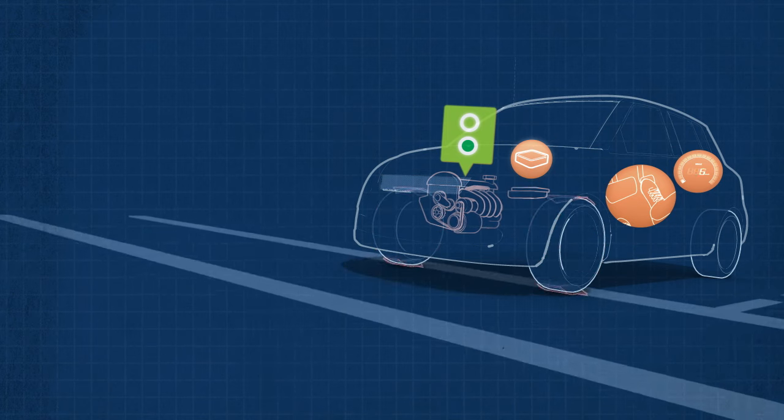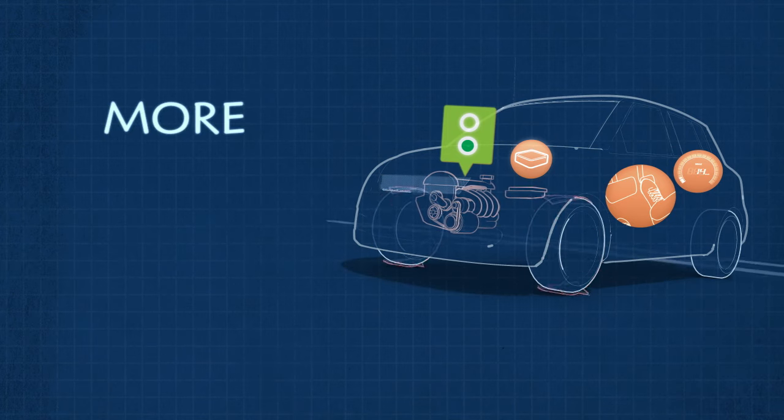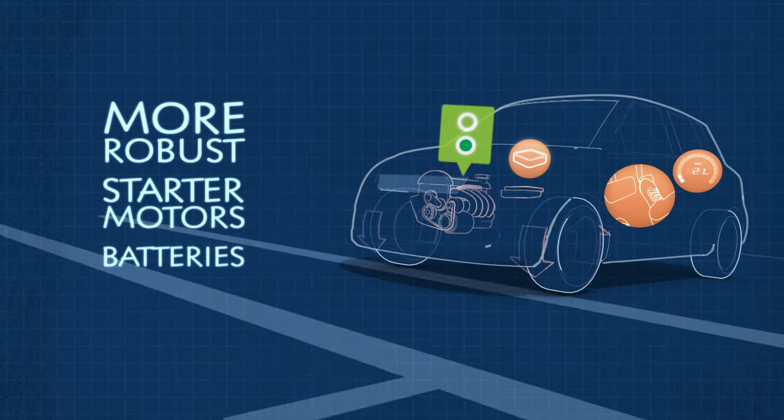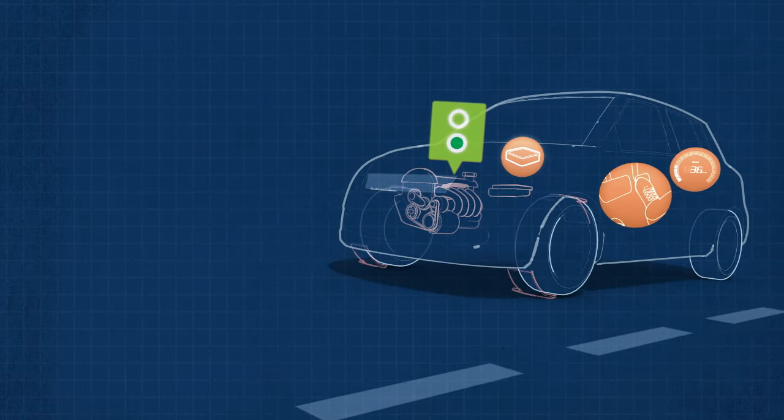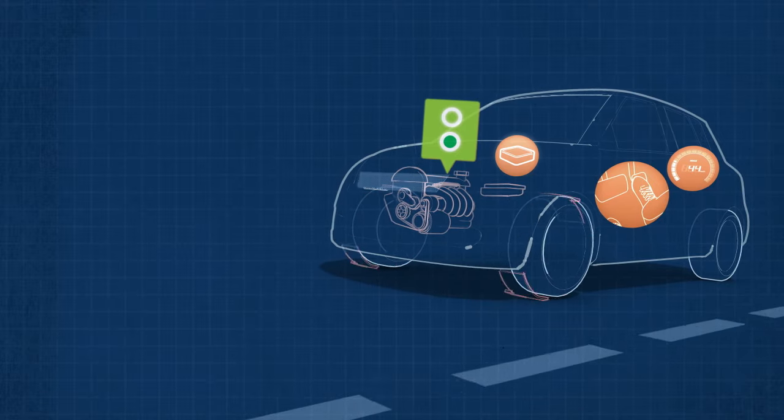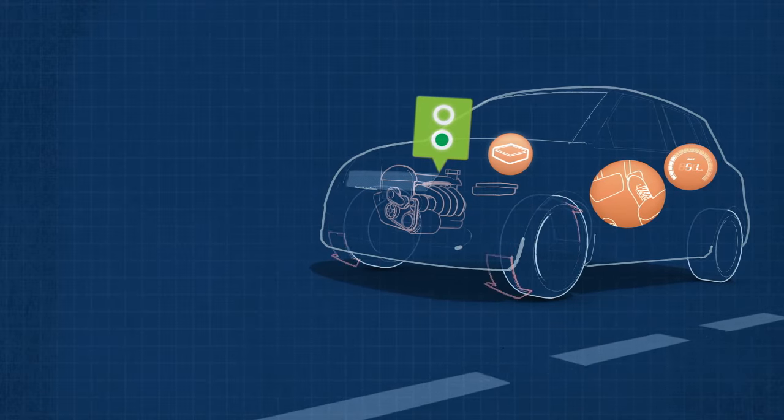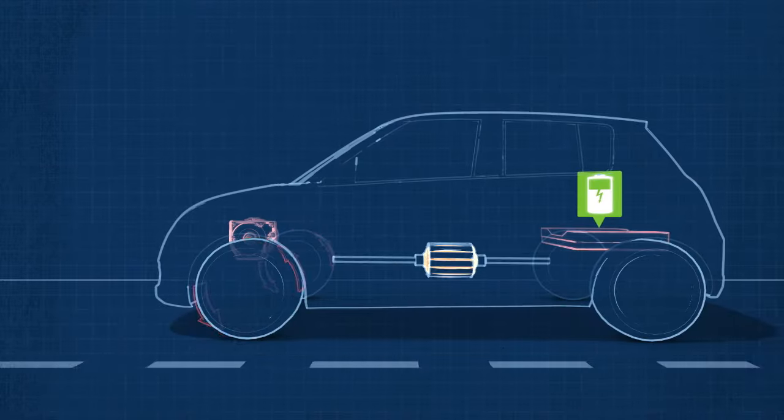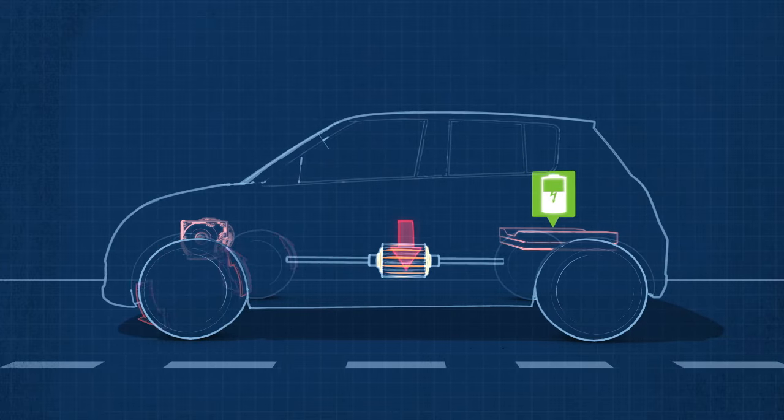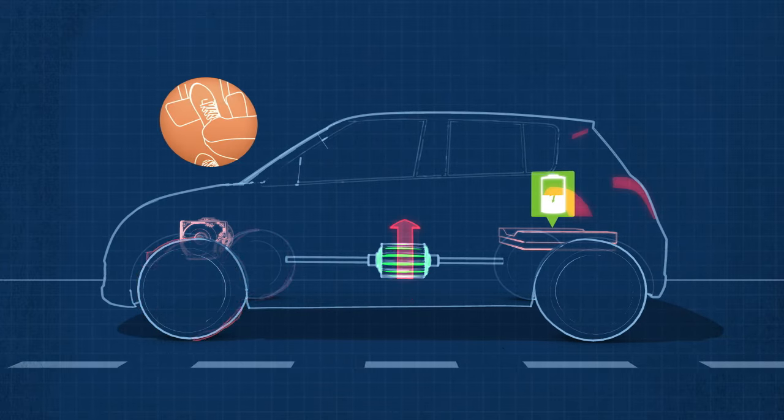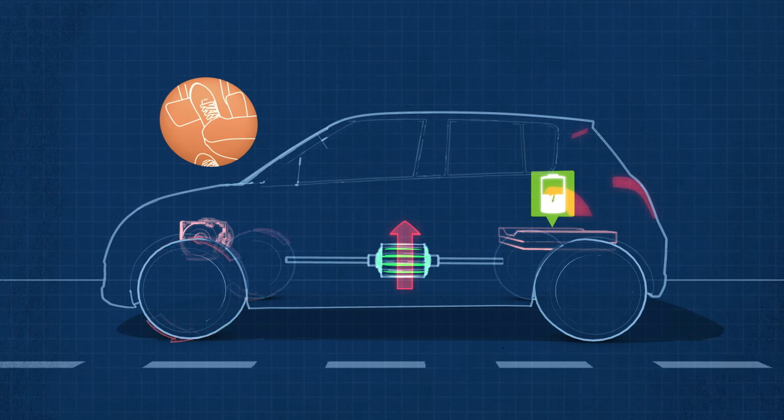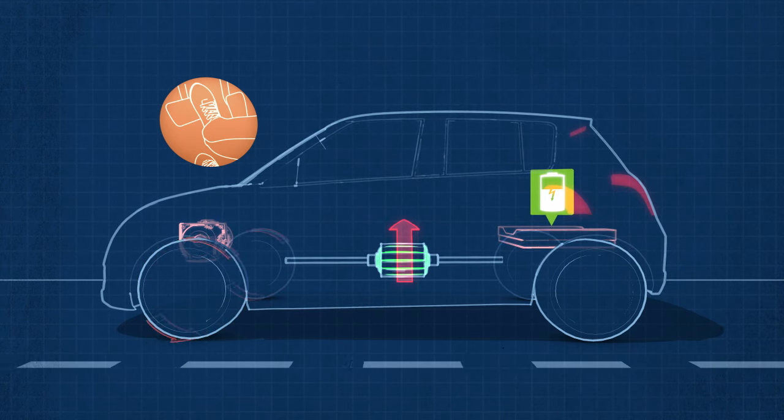By the way, idle stop-start vehicles typically have more robust starter motors and batteries in order to manage this increased starting activity. This system has been proven to have no detrimental effects on your starter motor or other driveline and engine components. And did you know that there is also new technology that uses the energy from braking to store power for those start-ups and lessen the effect on your battery, using regenerative braking and a sophisticated capacitor to store the electricity?